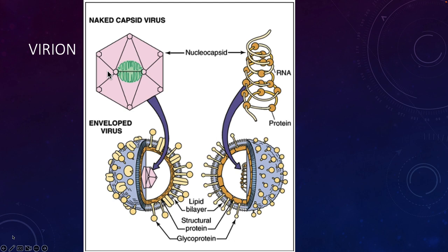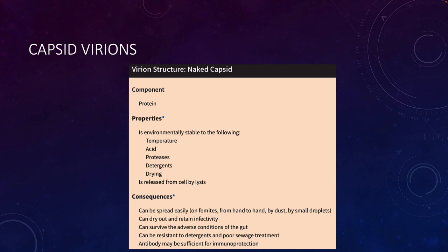A single viral particle is called a virion. For naked virions, it consists of the nucleic acids — RNA or DNA — and proteins. If the nucleocapsid is surrounded by an envelope, that is an enveloped virus. For naked viruses, the capsid on the outside is a protein capsid. Naked viruses tend to be very stable to the environment — stable to different temperatures, acid treatment, proteases, detergents, and drying — so it's harder to remove them from the environment.